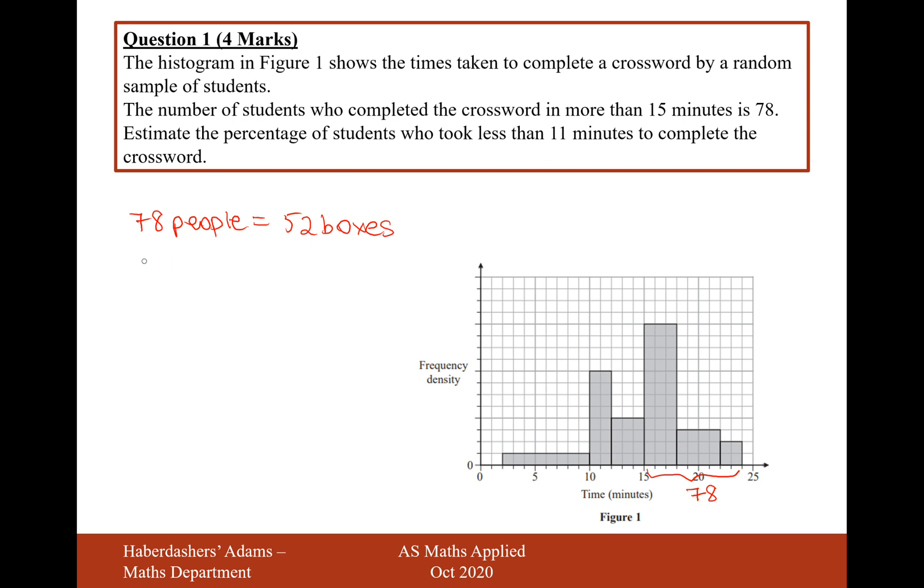So if we now divide by 52, we're going to get 1.5 people per box.